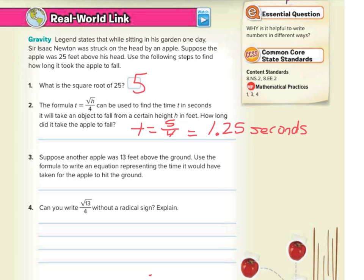Suppose another apple was 13 feet above the ground. Use the formula to write an equation representing the time it would have taken for the apple to hit the ground. Well, time would equal the square root of the height, 13, over 4. Can you write the square root of 13 over 4 without a radical sign? Explain.